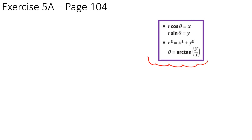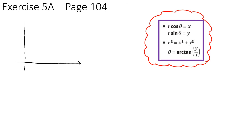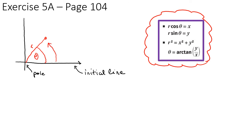You should now be able to do Exercise 5a on page 104. To recap: the origin is called the pole, the x-axis is the initial line, and a point is described by r and theta. r is the distance from the pole, theta is always measured anticlockwise from the initial line, and you use the conversion formulas to switch between polar and Cartesian forms.